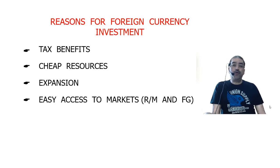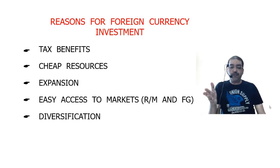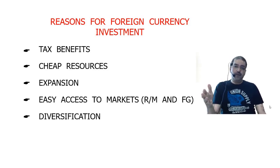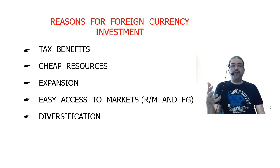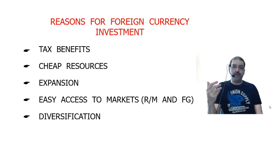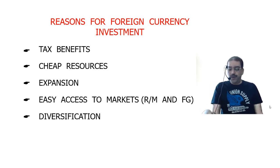Another reason may be diversification — changing my line of manufacture. For example, at present I am manufacturing pharmaceuticals and I want to diversify into automobiles, so I want to set up a plant in the US. Diversification may be one of the reasons. The most important reason is economic and political stability in the country.